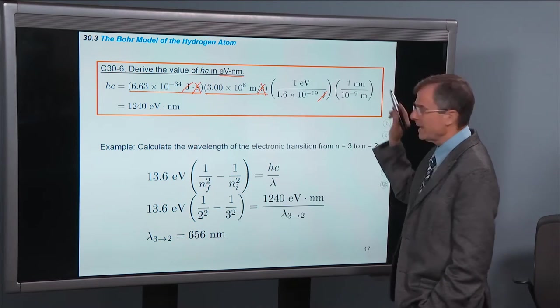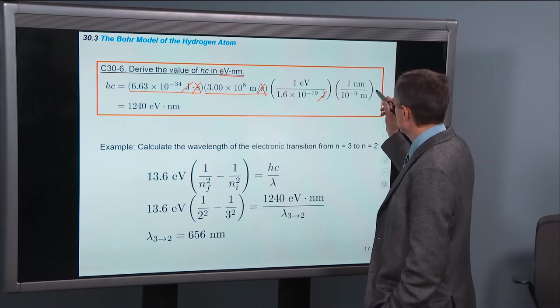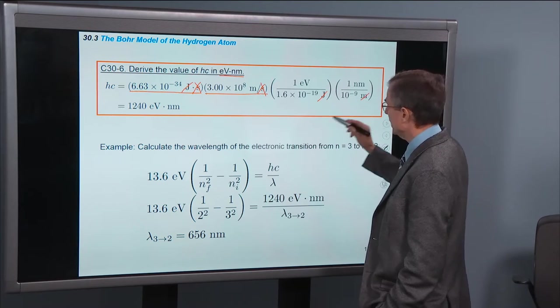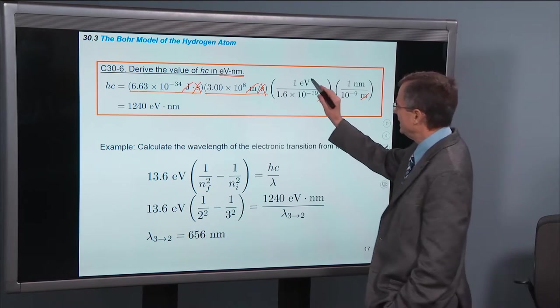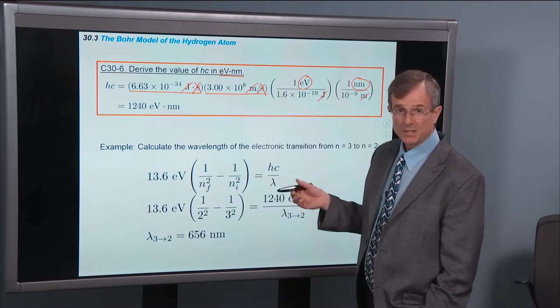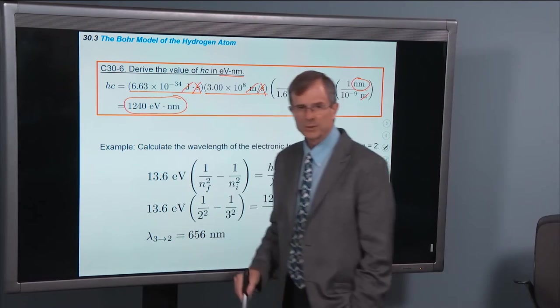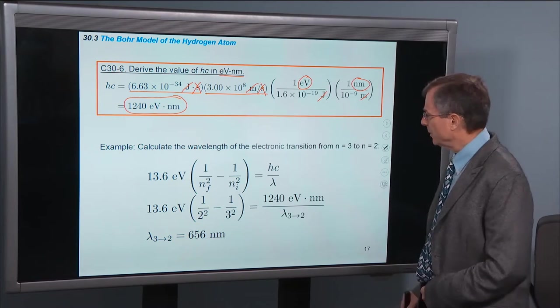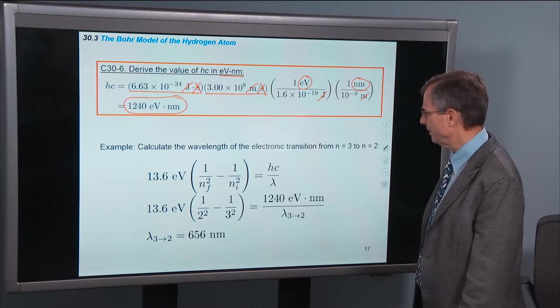And we also know that 1 nanometer is equal to 10 to the minus 9 meters. So that's this conversion factor which cancels out the meters and gives us something in units of eV nanometers. Plug the numbers in, no big deal. And it's 1240. Kind of a nice round number that's easy to commit to memory. But you can derive it, because you already know Planck's constant and you know the speed of light.